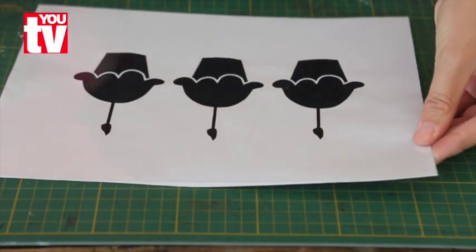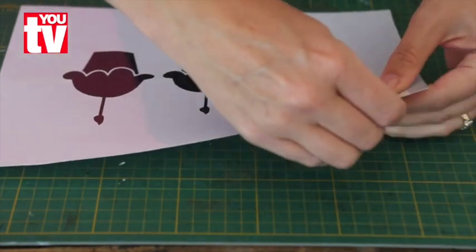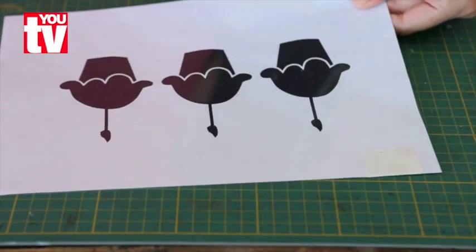Use the masking tape to stick the design and the transparency paper together so that it won't move while you cut it.